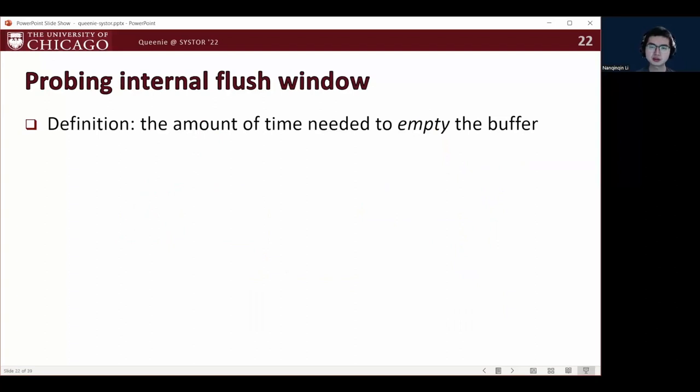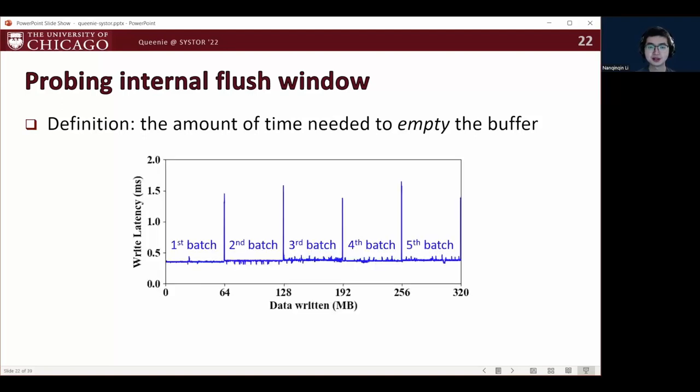The probing method for internal flush window is based on the probing method for the write buffer size. Here, we use another SSD with 64 megabytes of write buffer as an example. So as shown in this figure, with an intensive sequential write workload, we can see a latency spike of 1.5 milliseconds between two batches of 64 megabytes of write data.